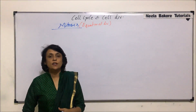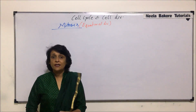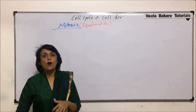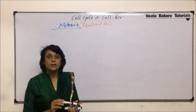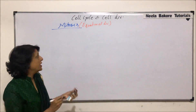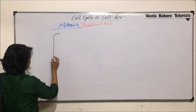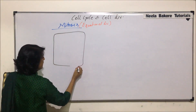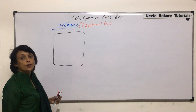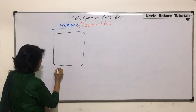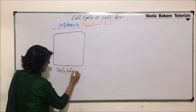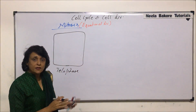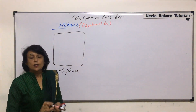We have discussed all the changes that take place in anaphase except one, which we will talk of when we come to cytokinesis. The next stage is telophase, and in telophase everything that happens is just the reverse or opposite of prophase.